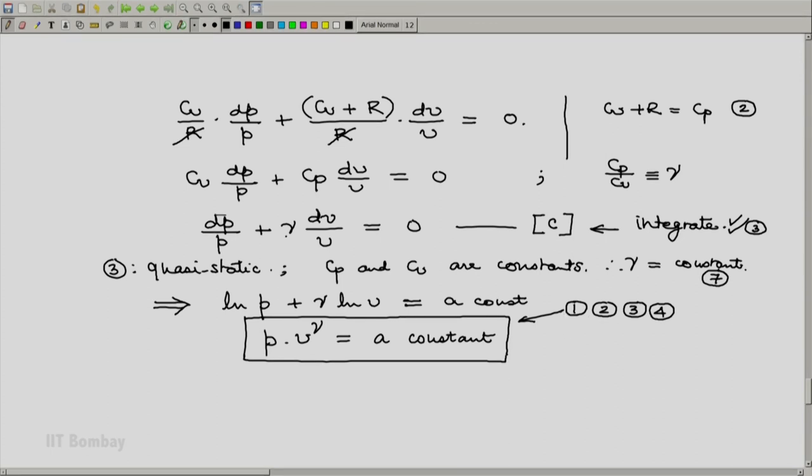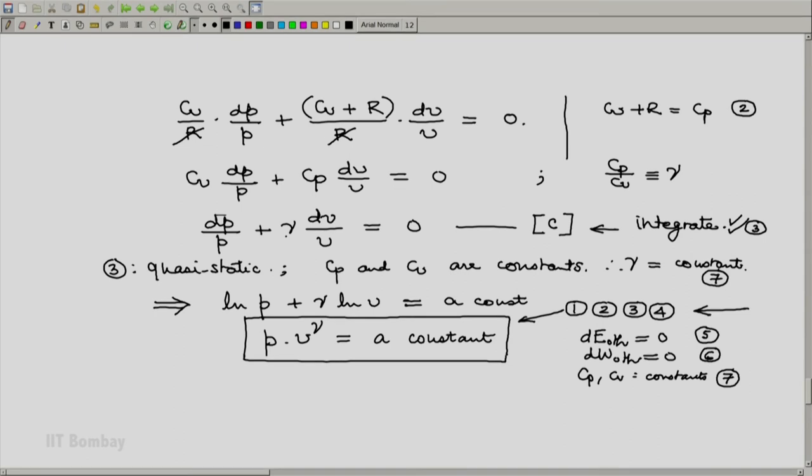Our first assumption was dE other is zero, that was piece of information 5. Then we assume dW other than expansion work was also zero, that was assumption 6. And finally we assume that CP and CV were constants, that was assumption 7. In any problem you solve in thermodynamics, any exercise you do, you will have to be conscious of the information provided, but you will also have to make consciously some assumptions and list them. Thank you.